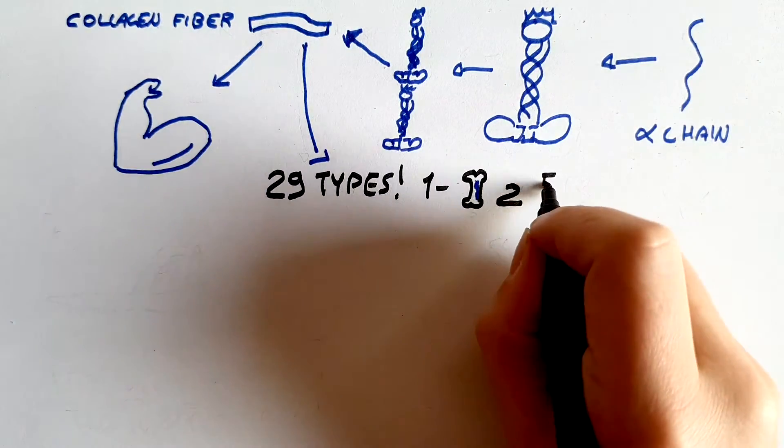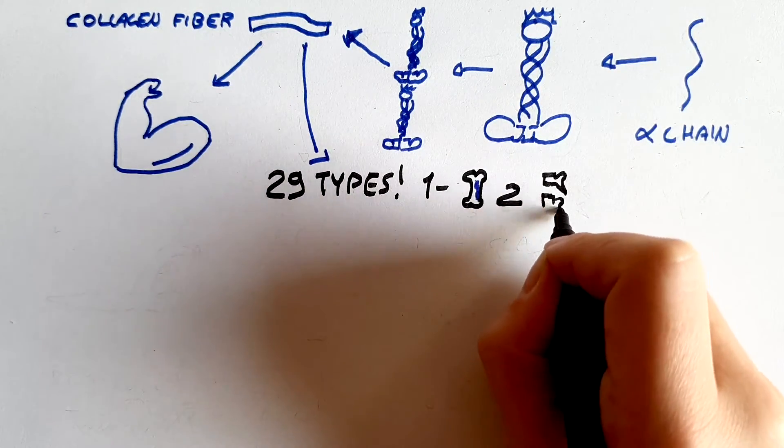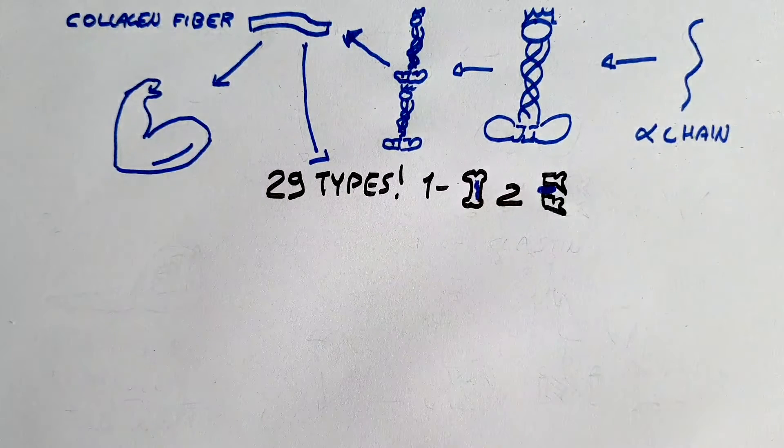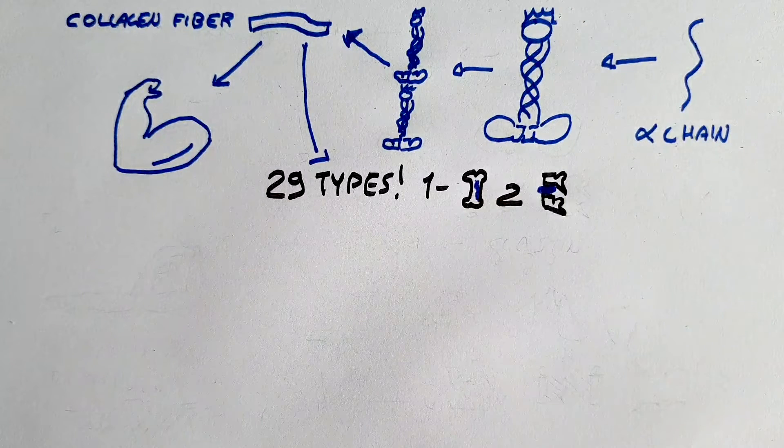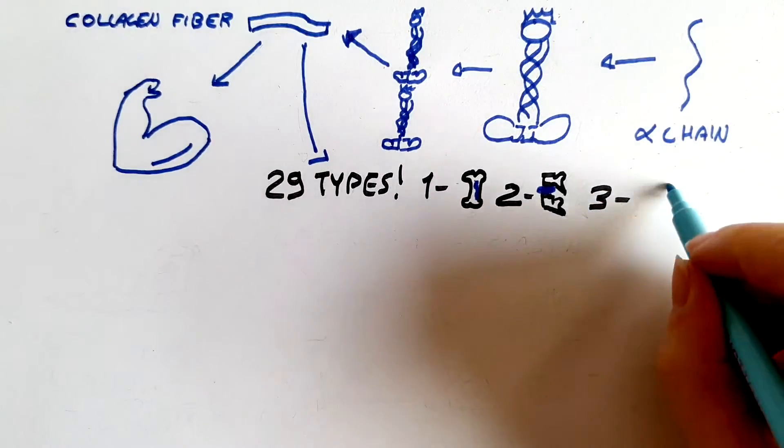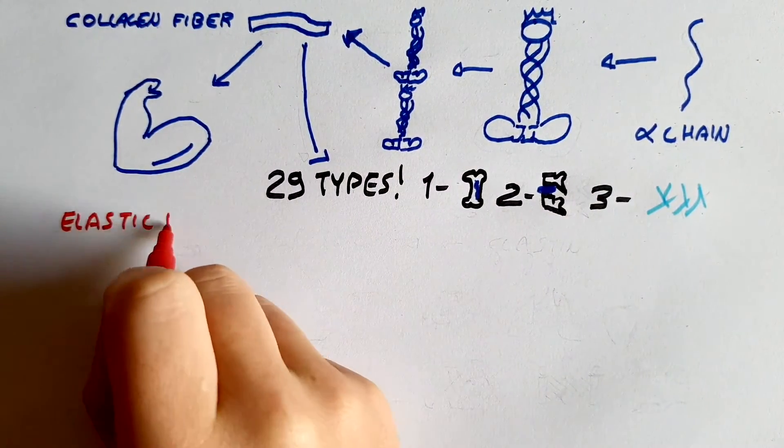Type 2 molecule is especially resistant to intermittent stress and therefore it is found in intervertebral discs and cartilage. Type 3 is found in skin and forms reticular fibers.